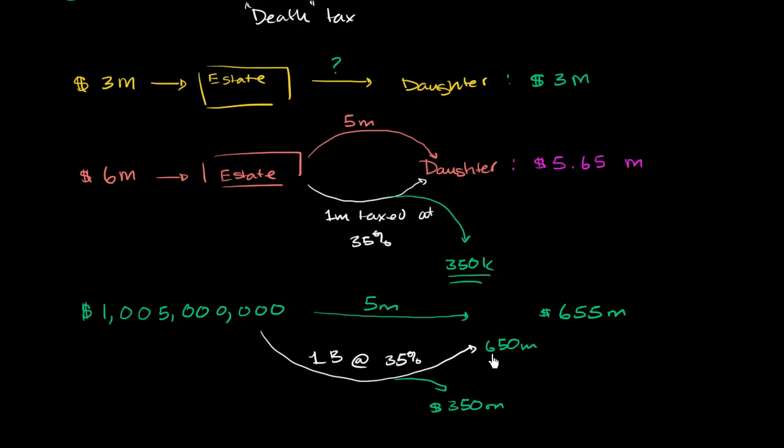So that's just how the estate tax works. And these examples I gave with the $5 million that is excluded, this is for an individual when they pass away. If it's being done as a couple, this exemption is actually $10 million. So between my wife and I, if we have $1,005,000,000 and I pass away and we own everything collectively, she actually gets the extra joint exemption passed on to her. And then when she passes away, $10 million will be tax free. So in this scenario, if this is being done as a couple, my daughter would get the entire $6 million.